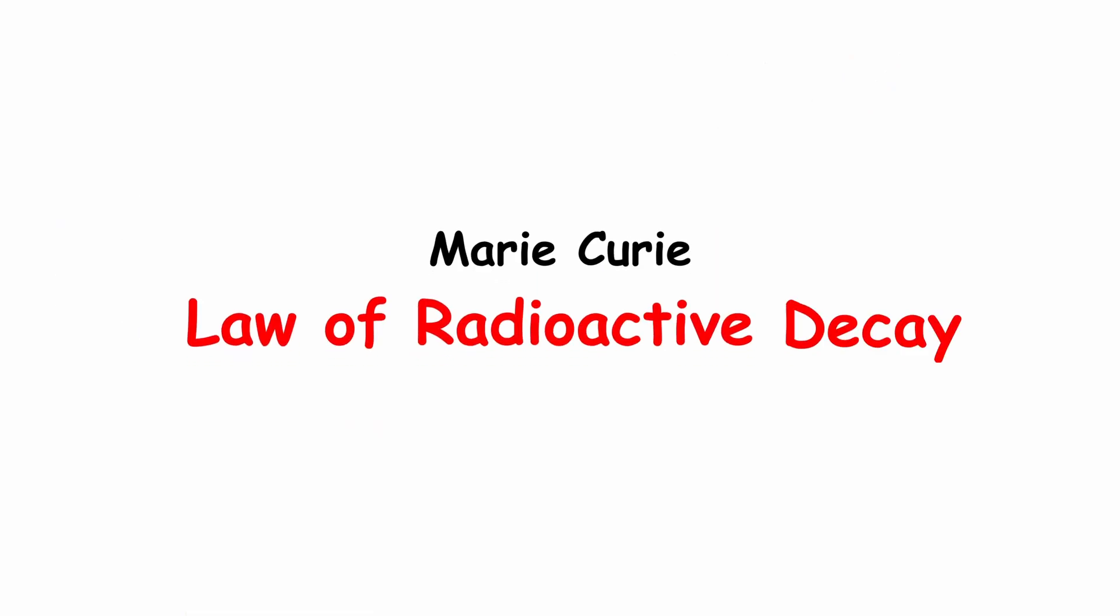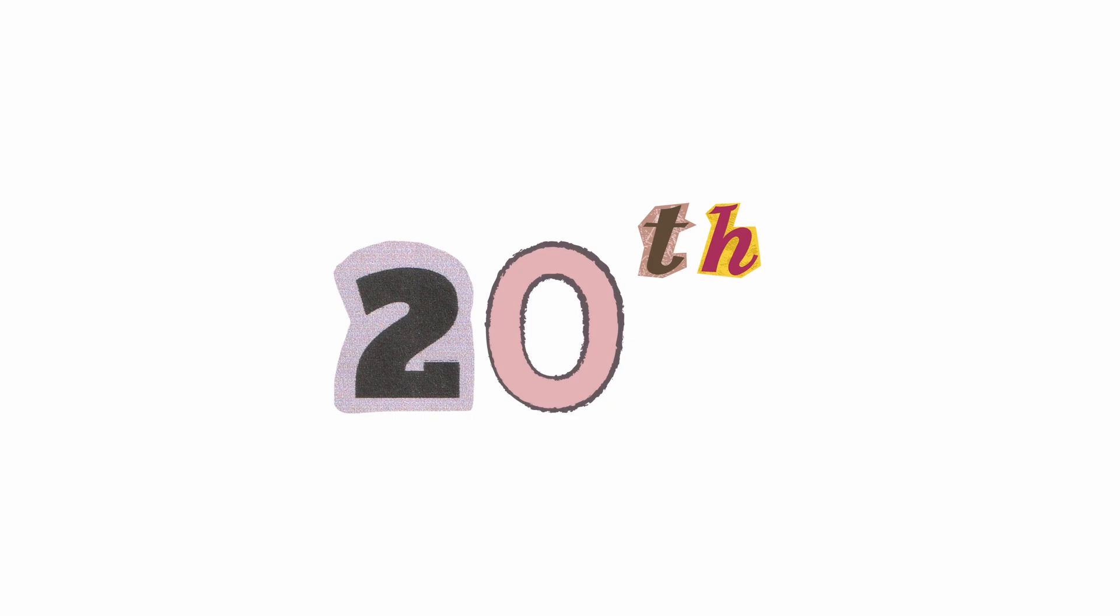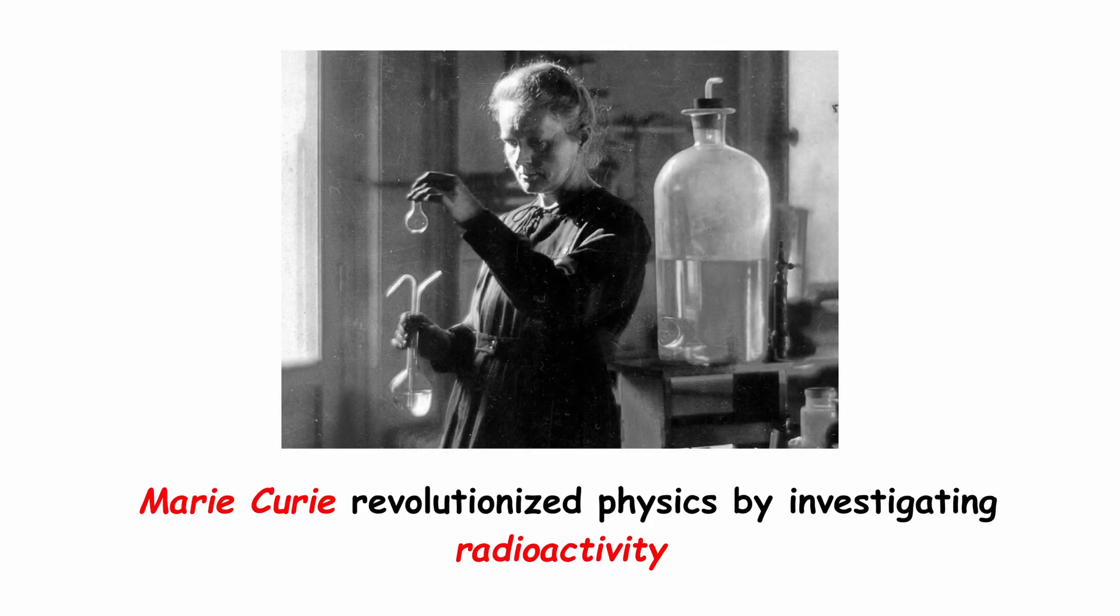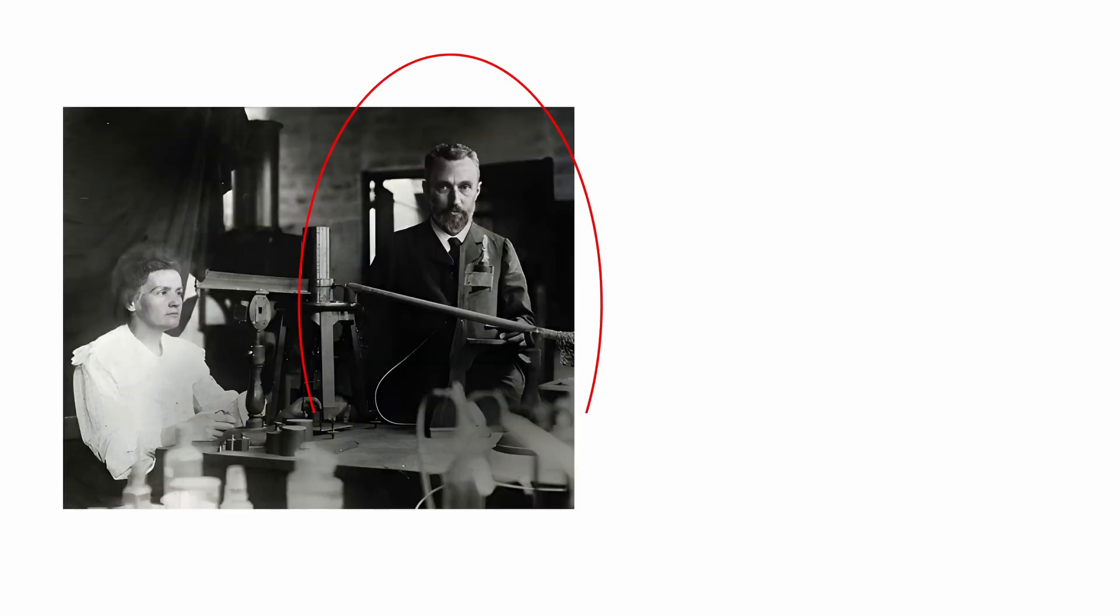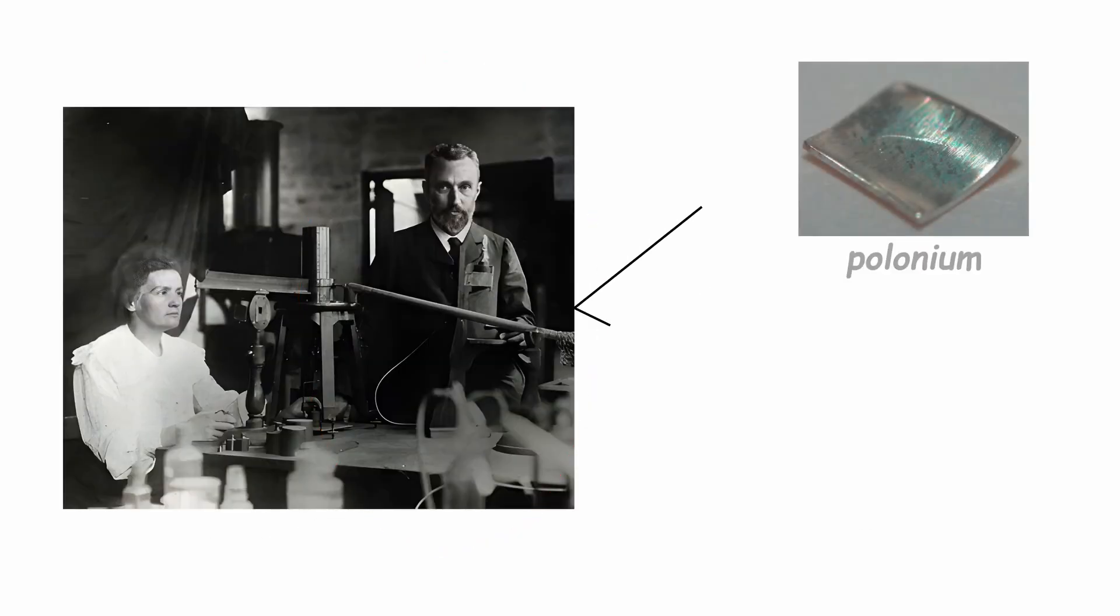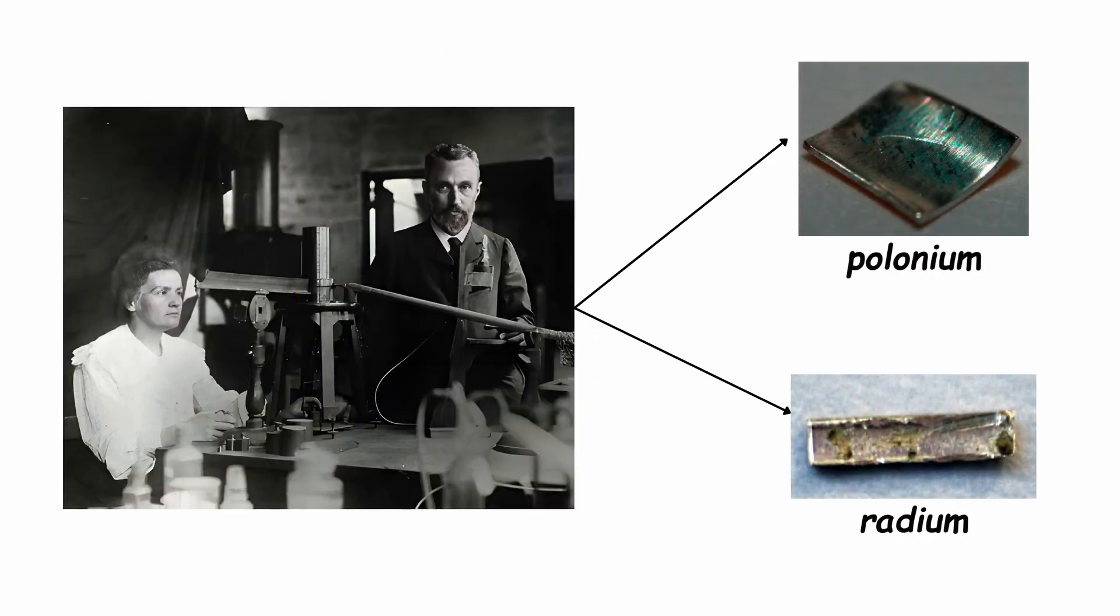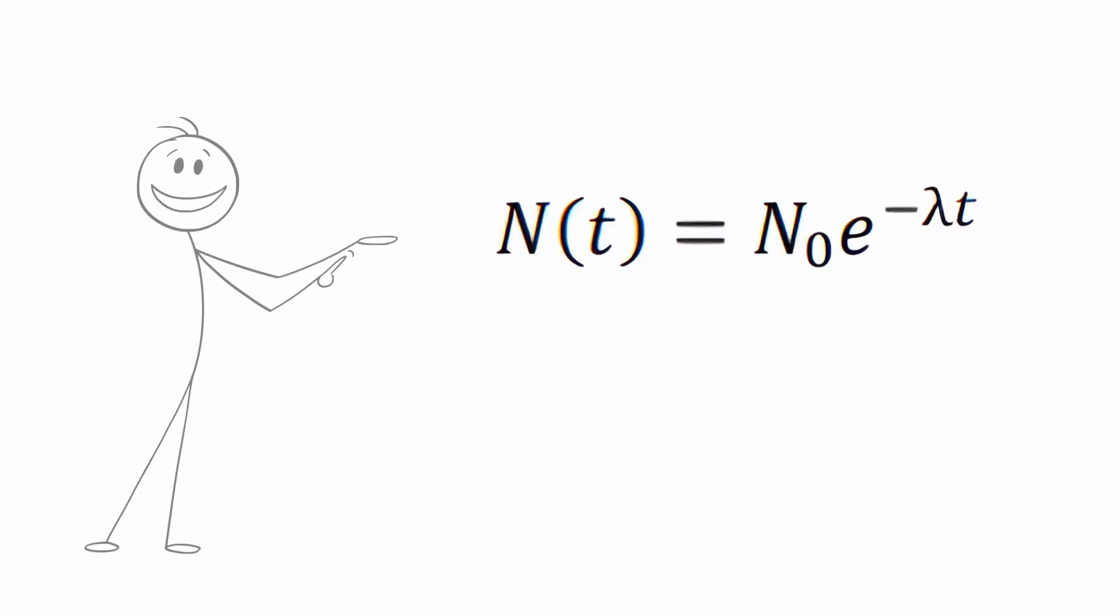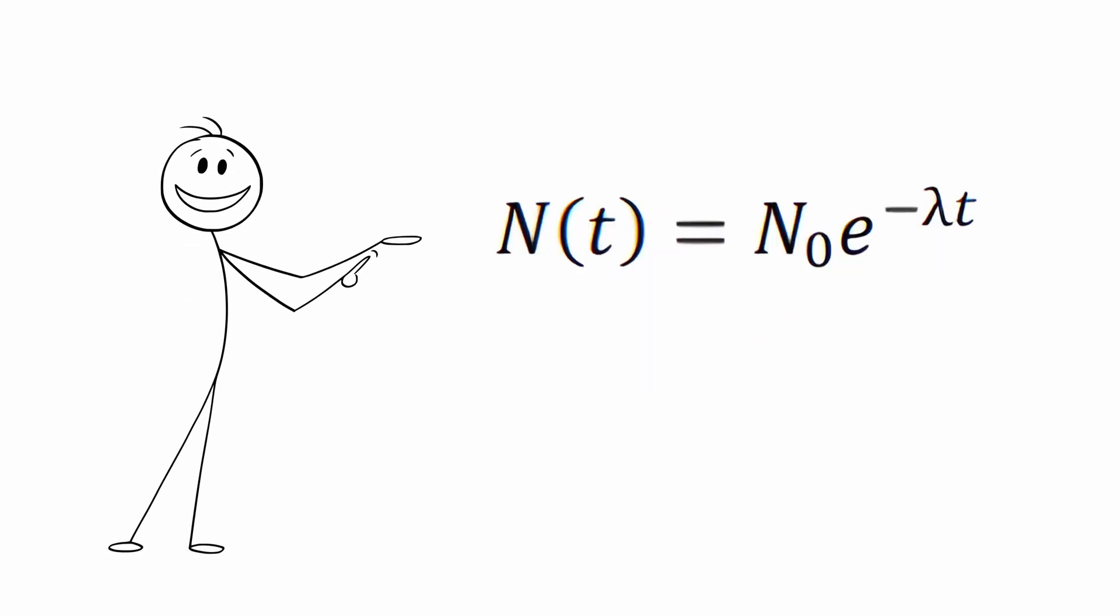Marie Curie – Law of Radioactive Decay. At the beginning of the 20th century, Marie Curie revolutionized physics by investigating radioactivity, a term she coined herself. Together with Pierre Curie, she discovered the elements polonium and radium in 1898 and formulated a key law for understanding radioactive decay.